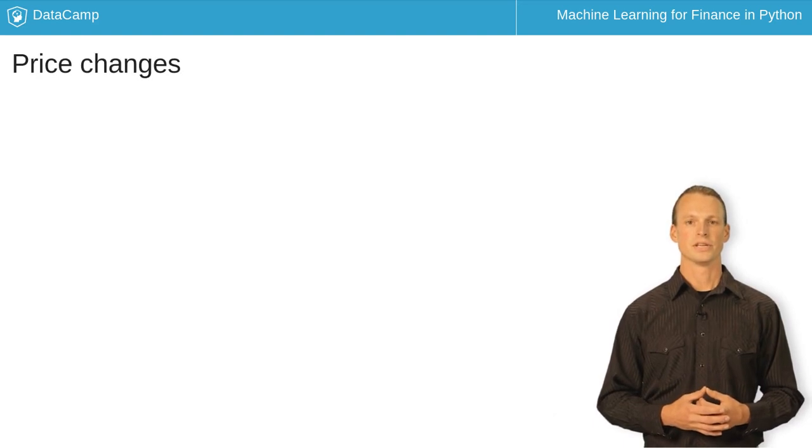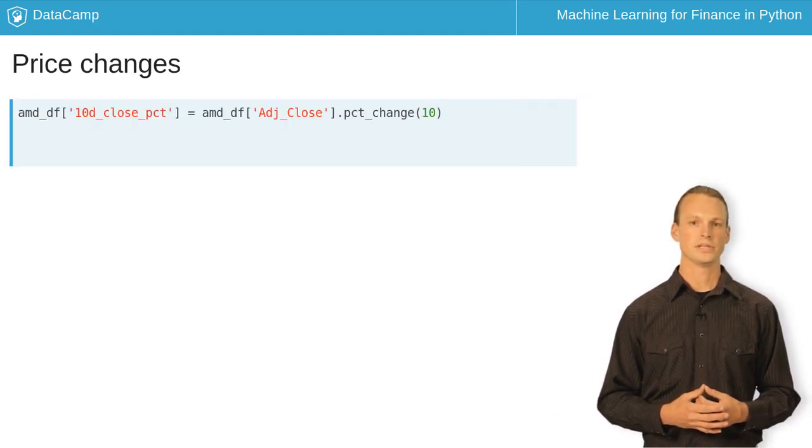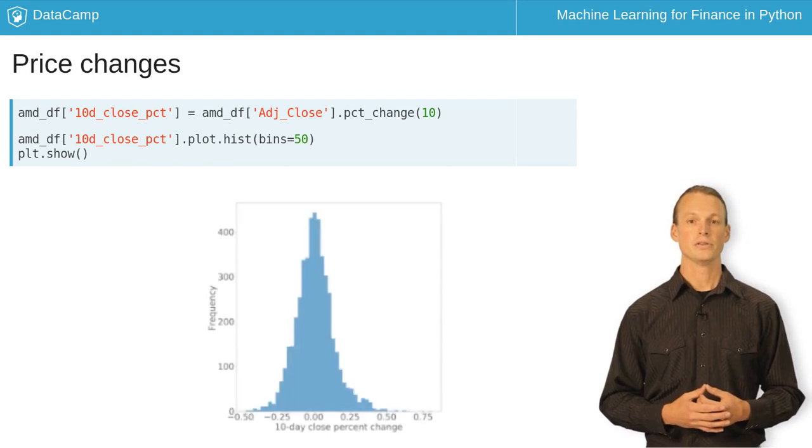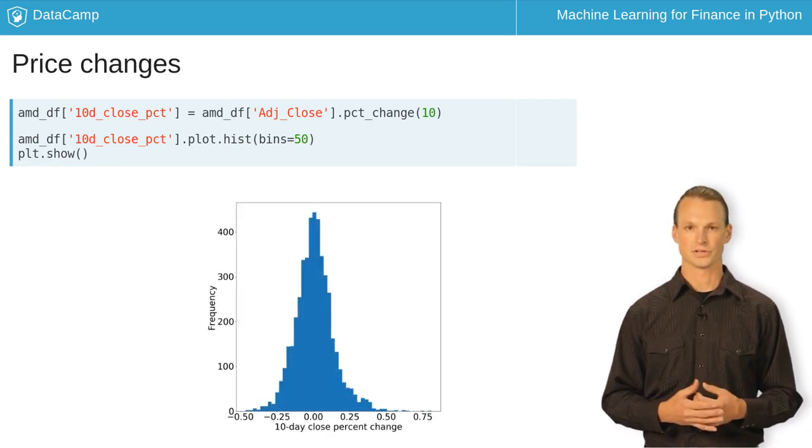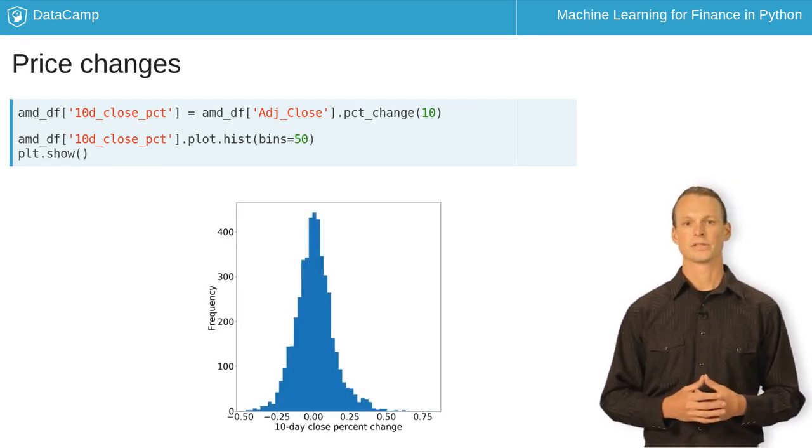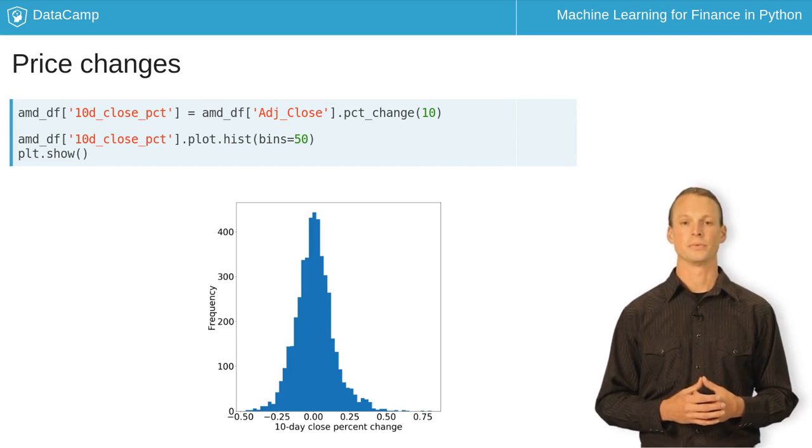To get the percent change over a period, we can use PCTChange on a Pandas dataframe. We can use this to see a histogram of percent changes over time, which typically is a right-skewed, nearly normal distribution for stocks.